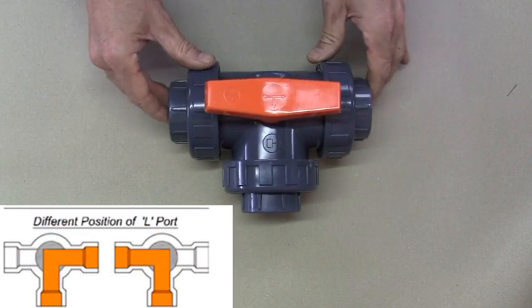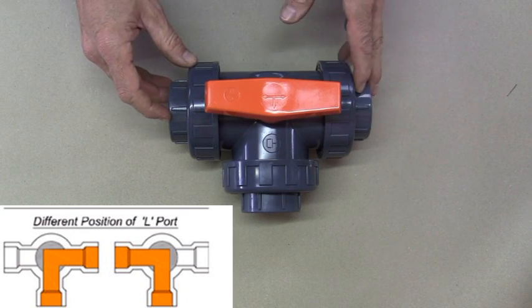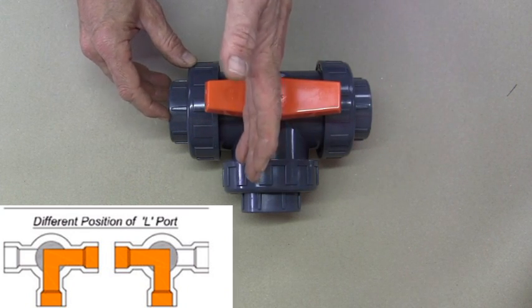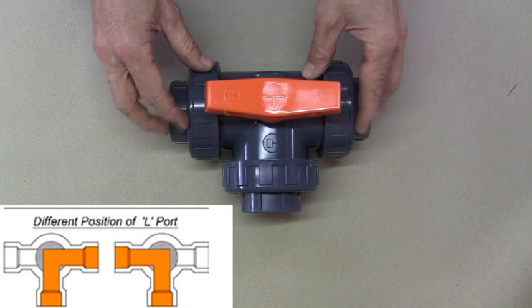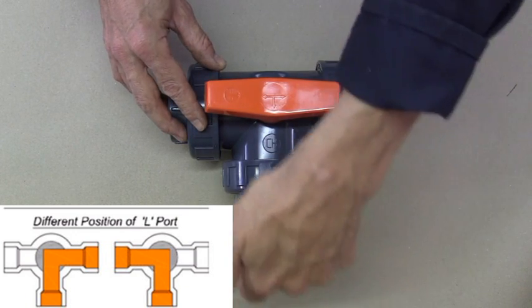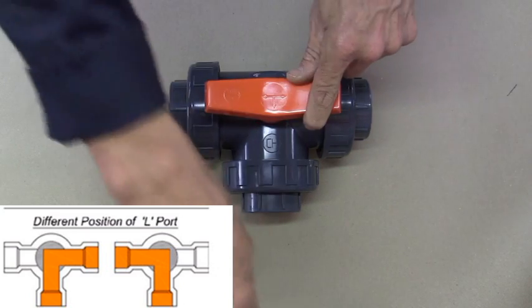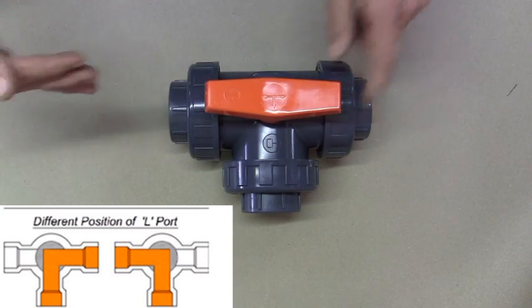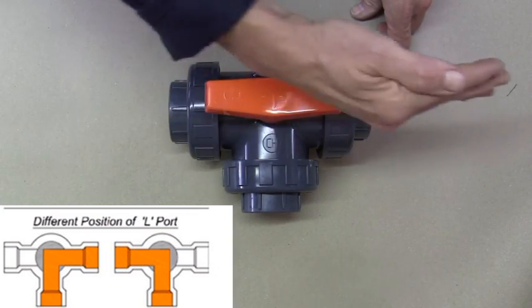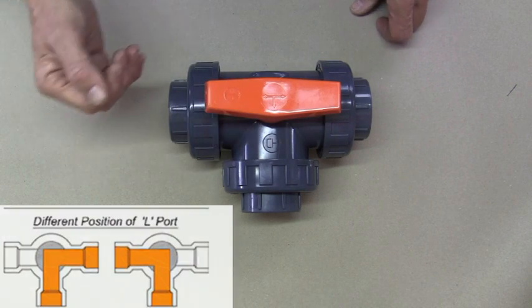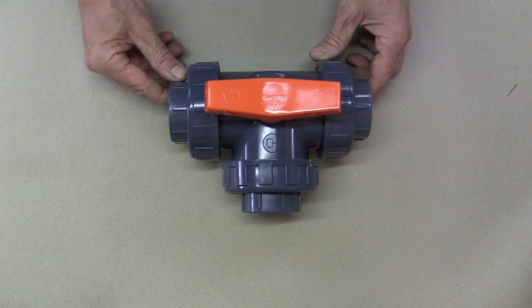An L-port valve is kind of the same except the ball has one fewer hole in it, so the L-port valve only gives us the option of having fluid coming in and that way or the fluid going that way. It doesn't give the option of the fluid going right the way down or all three ports being open at the same time.